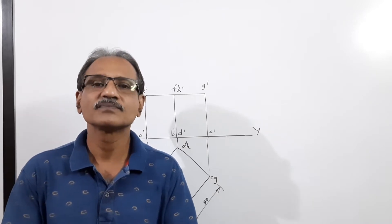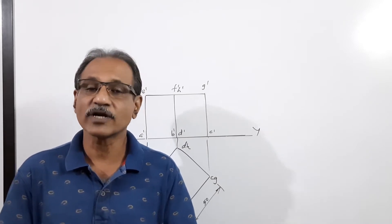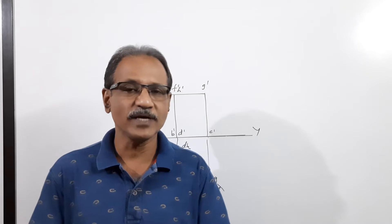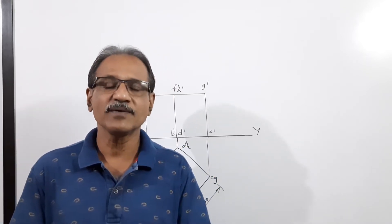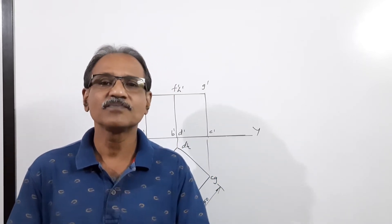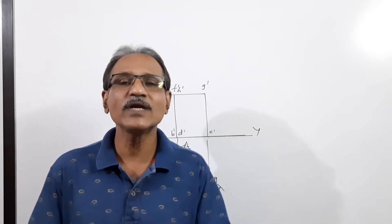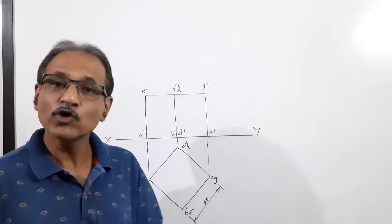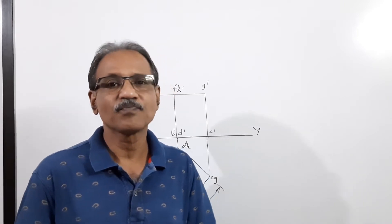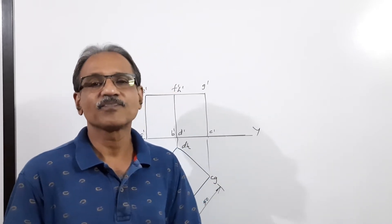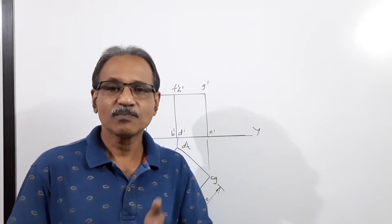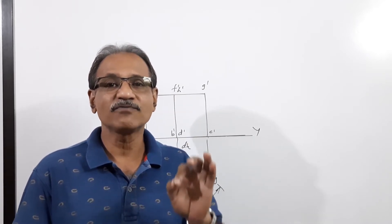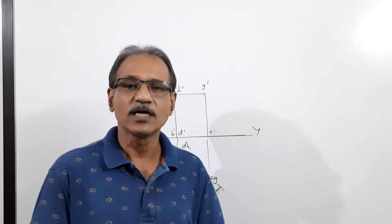The cube 50 mm side rests on the ground on a face. This is cut by a cutting plane perpendicular to VP and inclined to HP, such that the true shape is an equilateral triangle of side 50 mm. Draw the sectional plan, sectional elevation, and true shape of section.